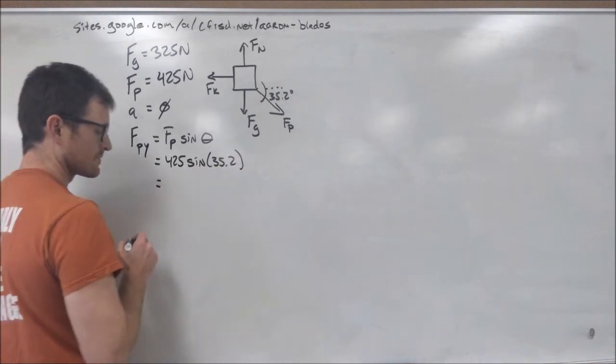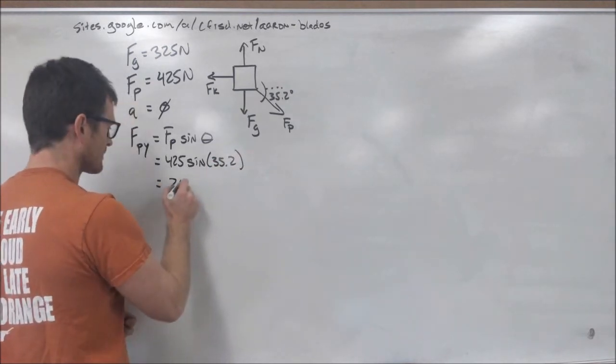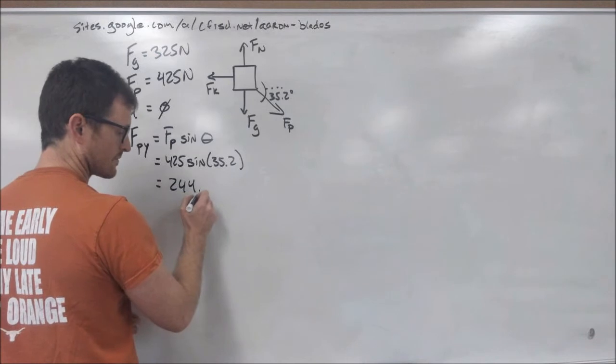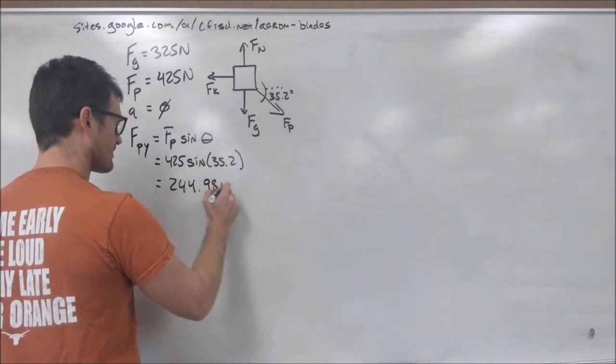Or 425 times the sine of 35.2 degrees. That gives us 244.98 newtons.